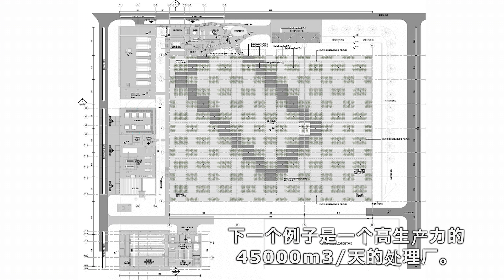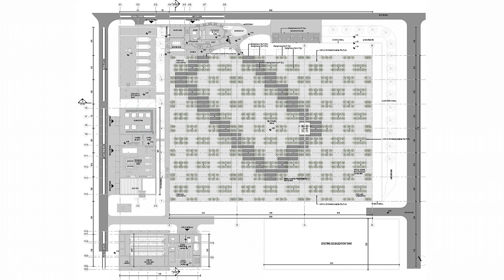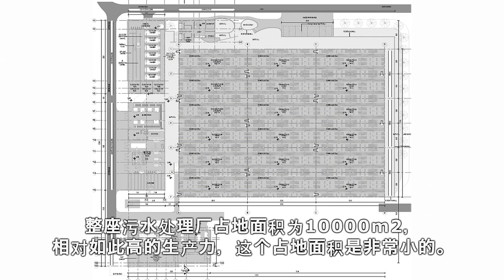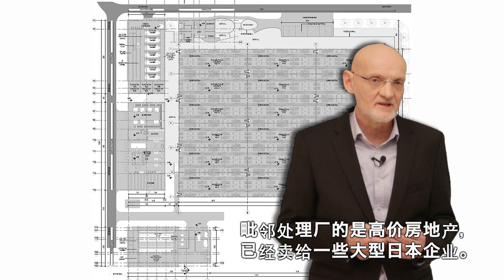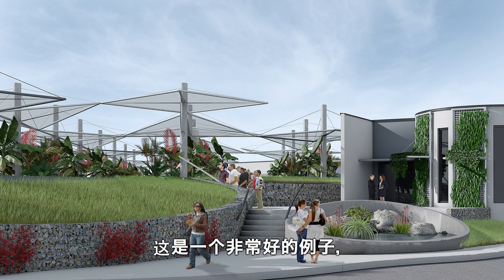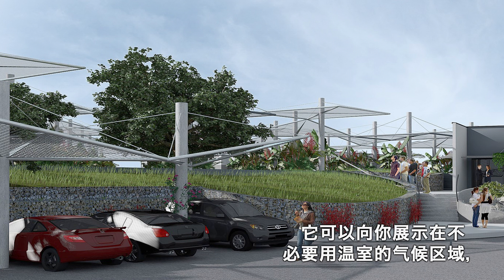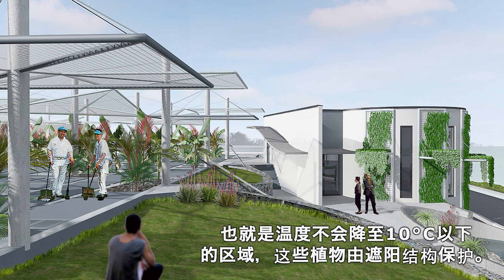The next example is a larger capacity plant — 45,000 cubic meters a day — for one of the largest industrial and logistical parks in Indonesia. The entire plant occupies about 10,000 square meters, which for that capacity is a very small footprint. Immediately next door, high-value real estate is being sold to the largest Japanese companies. In the pictures, you can see the entrance area to the treatment plant. In climates where the temperature doesn't drop below 10 degrees centigrade, the greenhouse is not necessary and the plants are protected by shading structures.